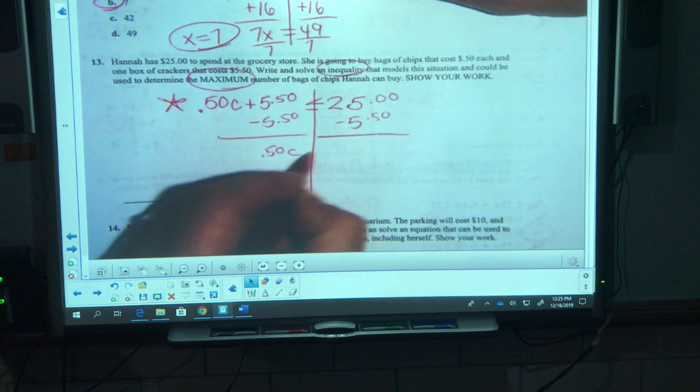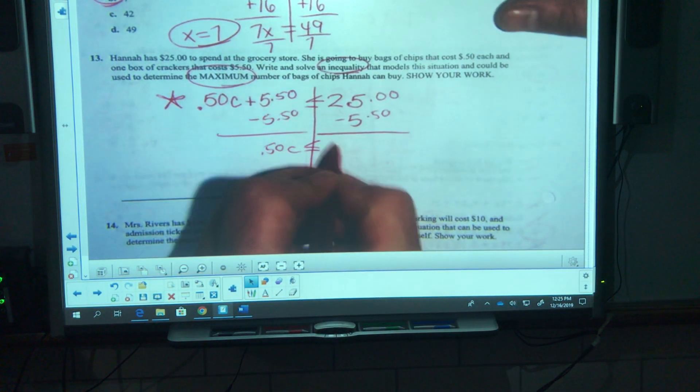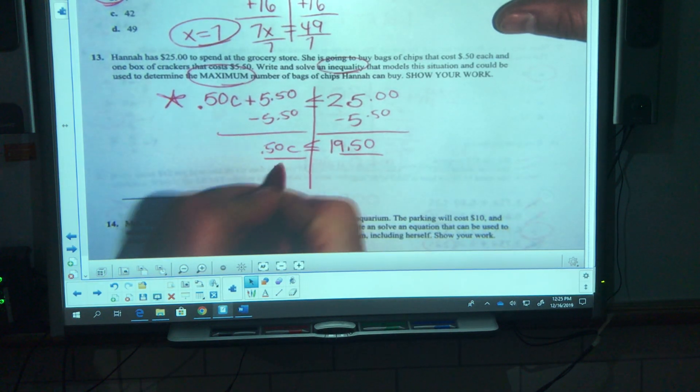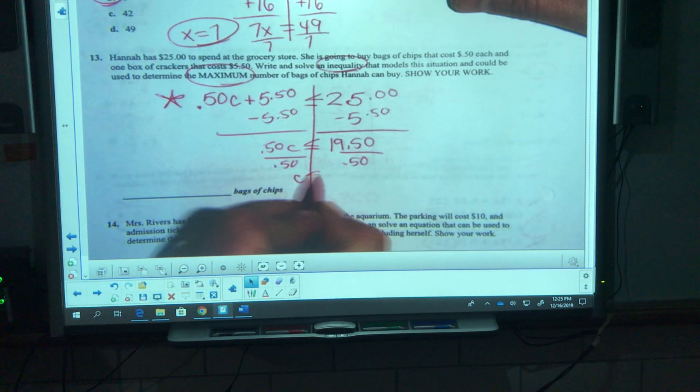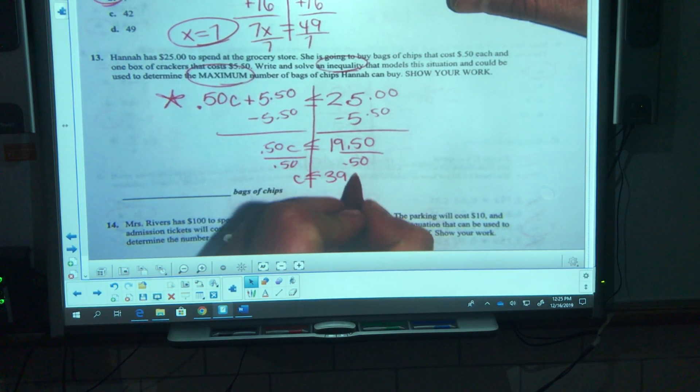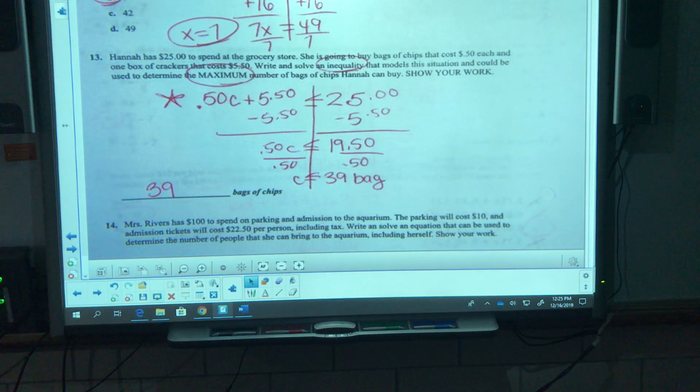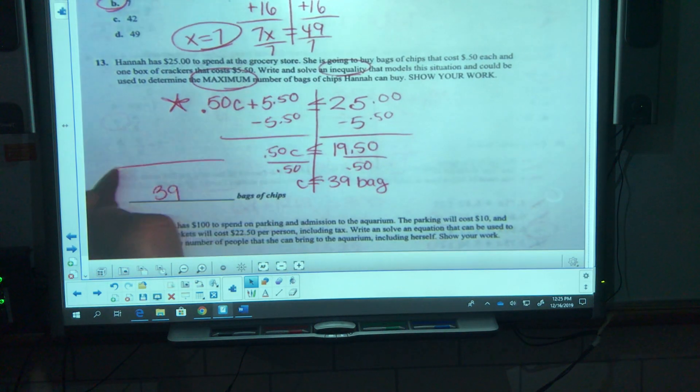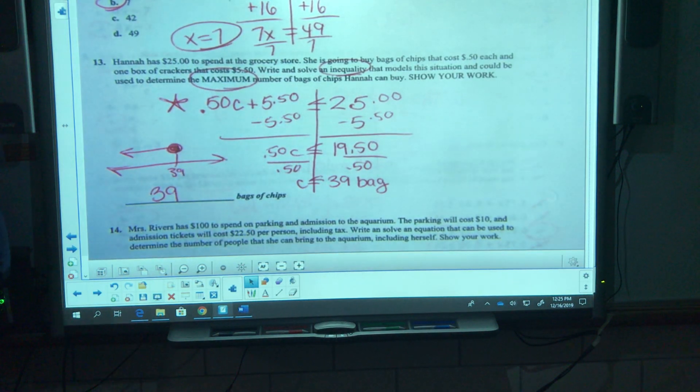Here's my inequality, there's step one. Now let's solve it. Subtract 5.50, subtract 5.50. 50 cents per bag of chips is less than or equal to 25 minus 5.50, which is 19.50. How many bags of chips can we get out of that? Divide by 50 cents. 19.50 divided by 50 cents is c is less than or equal to 39 bags. The maximum amount is 39 bags of chips. The circle on the graph includes 39, so that would be filled in, anything less than that.